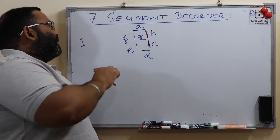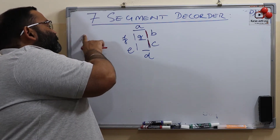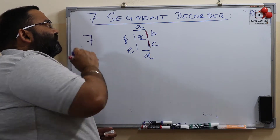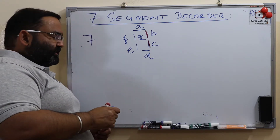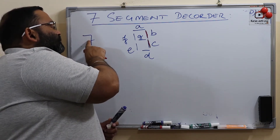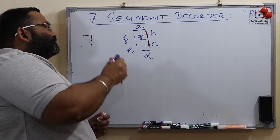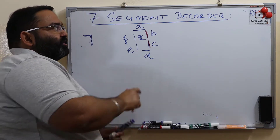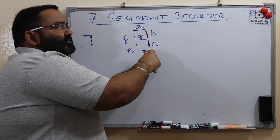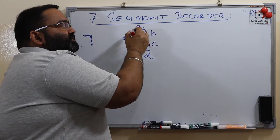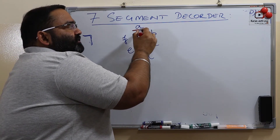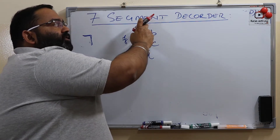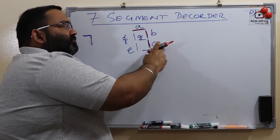Now similarly, if I want to display decimal number 7. To display decimal number 7, we already have B on and C on. Which other segment do we need to turn on? That is segment A. So segment A will be on, B will be on, and C will be on.